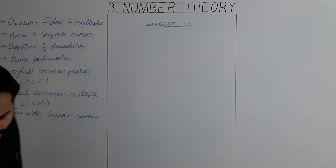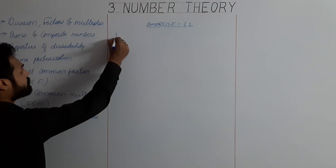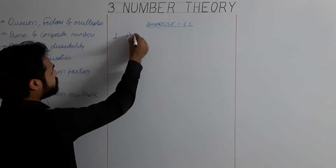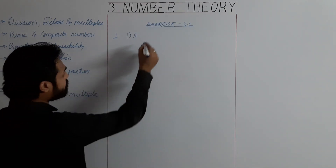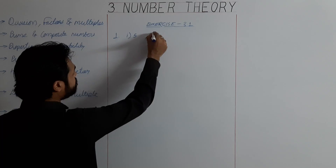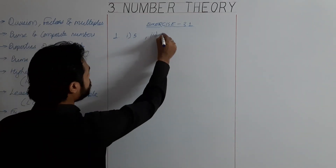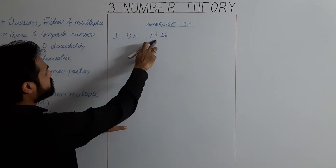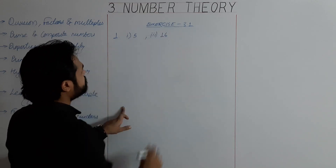5 is not a factor of 12 — we write that using the 'not a factor of' symbol. And 3 is a factor of 12. Now let's move to Exercise 3.1. Question number 1: write 3 multiples of 5 and of 16. Part 2 and part 4 are your homework.